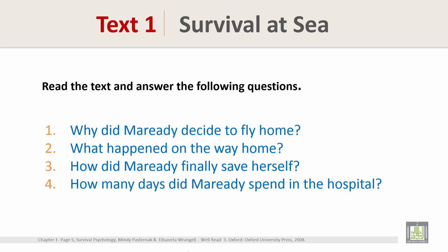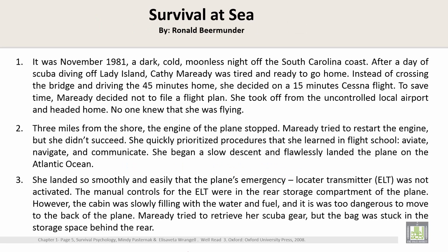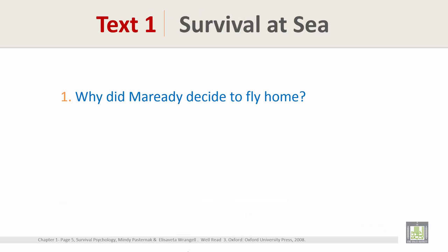Start with Question 1: Why did Meredith decide to fly home? Here is your text. Read the first paragraph. The first paragraph reads: It was November 1981, a dark cold moonless night off the South Carolina coast. After a day of scuba diving off Ladies Island, Kathy Meredith was tired and ready to go home. Instead of crossing the bridge and driving the 45 minutes home, she decided on a 15-minute Cessna flight to save time. Meredith decided not to file a flight plan. She took off from the uncontrolled local airport and headed home. No one knew that she was flying.